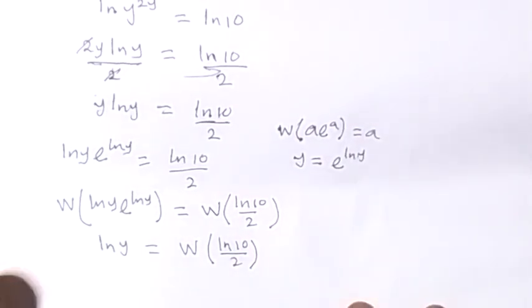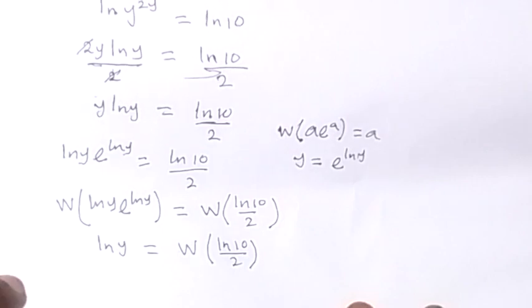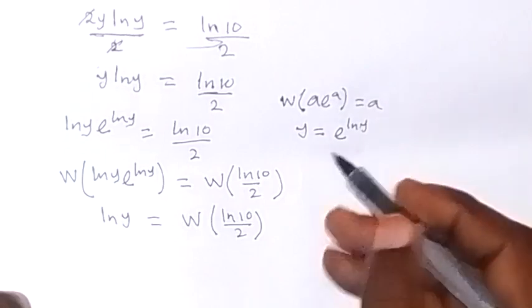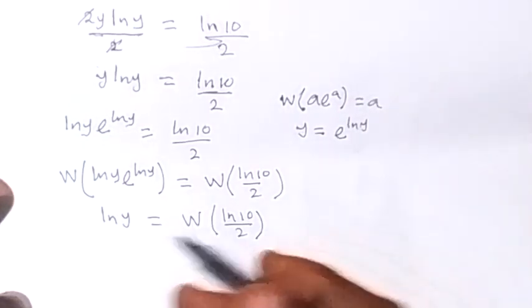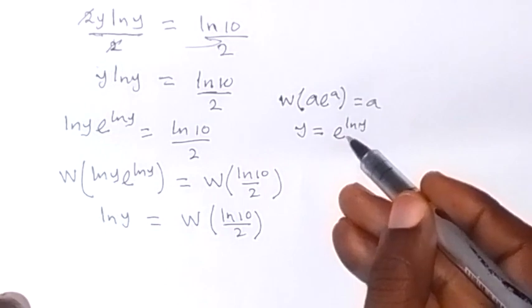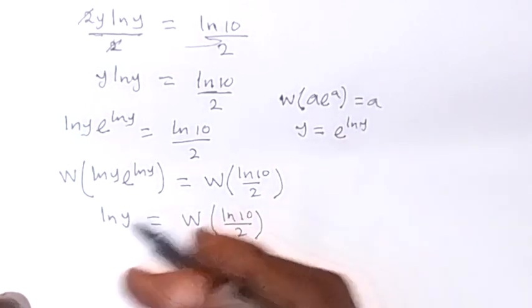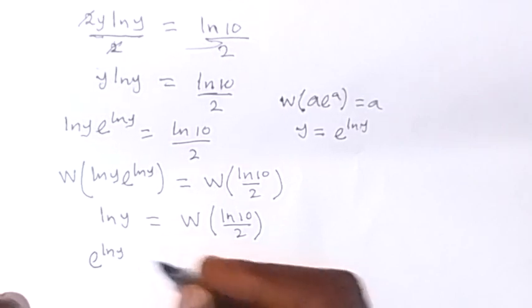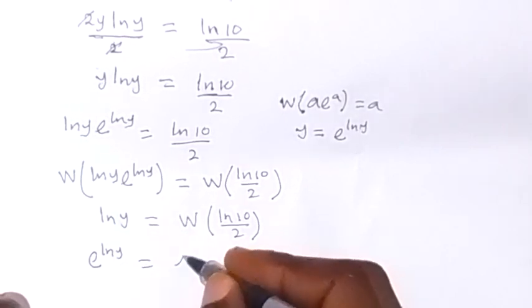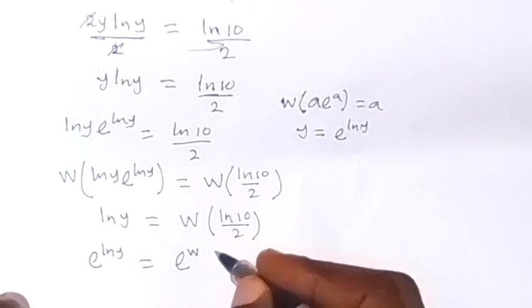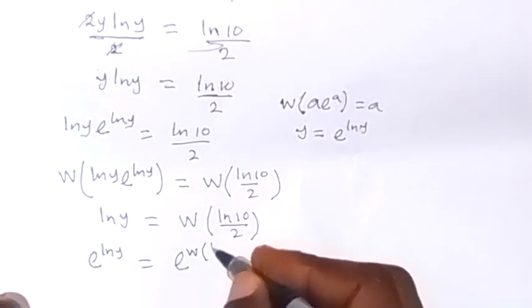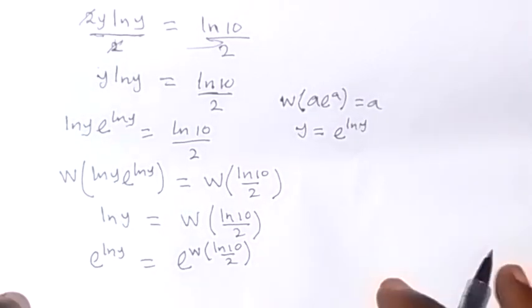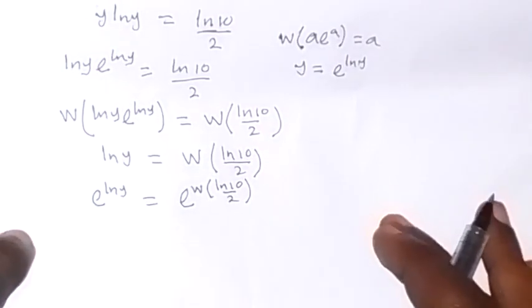Then from here, also we can introduce exponent. That is to make this one become y, we introduce exponent. And that will make it y. So we have e raised to power ln y, will then be equals to e raised to power W function ln 10 over 2. So we introduce exponents on both sides.